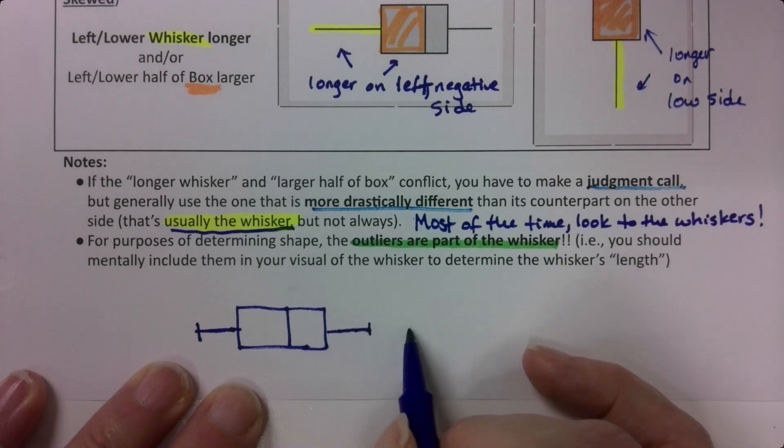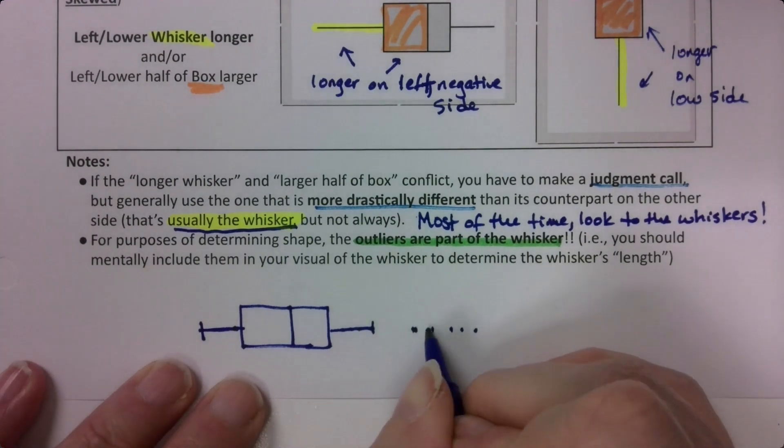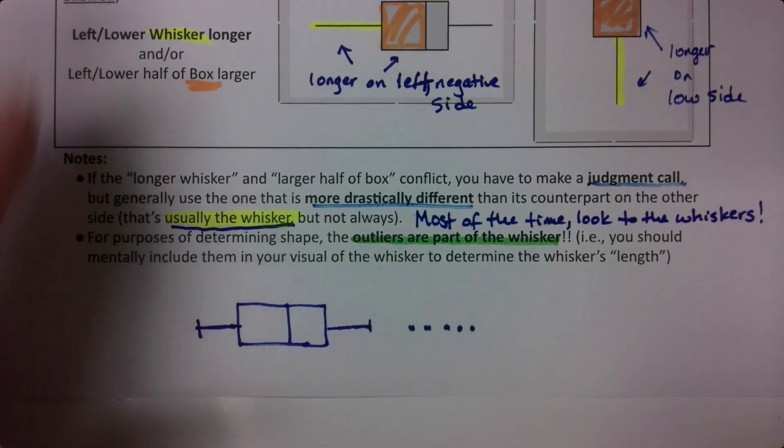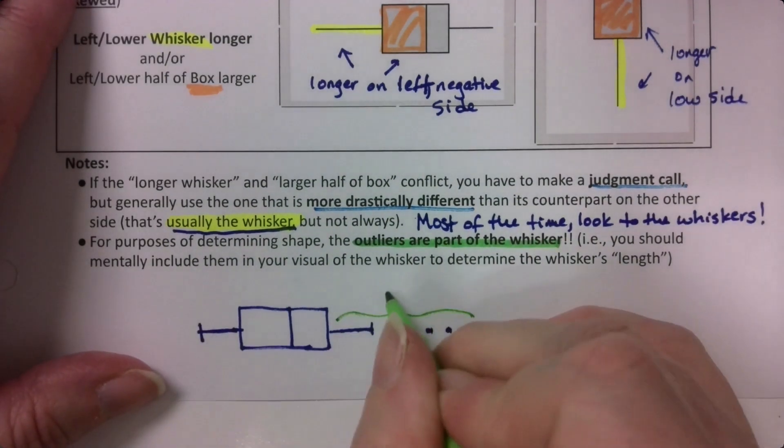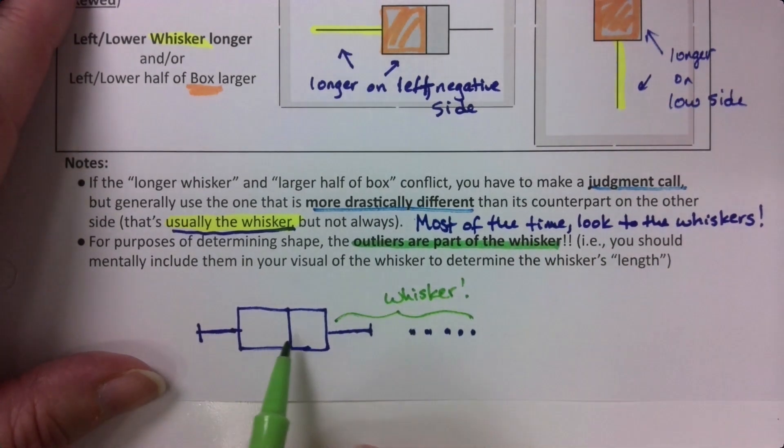and then I make dot, dot, dot, dot, dot. I don't know why I gave it a lot of outliers. It doesn't need that many. But this is skewed right. That is the whisker. The whisker goes this whole way.